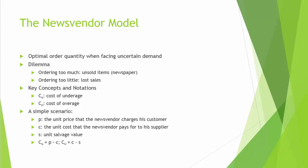Let's say you order Q copies of the newspaper. There are two possible scenarios. One: the demand turns out to be less than Q. In this scenario, you will have leftover newspaper. Let's say you can recycle unsold copies for S dollars per copy — S is usually called salvage value. Apparently, S will be much less than C. When this scenario occurs, your cost will be C minus S. This is the unit cost for having too many copies, denoted by CO, typically called overage cost or overstocking cost.